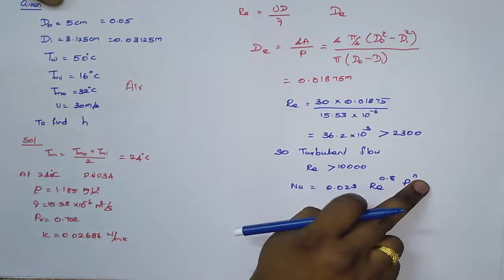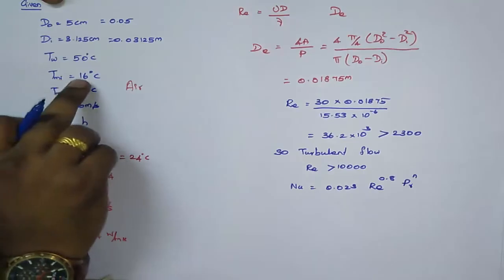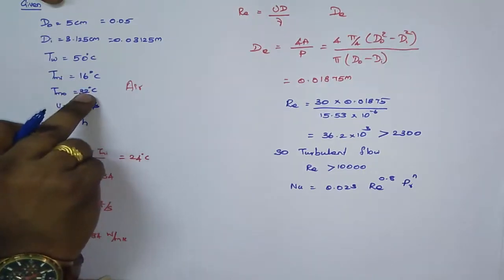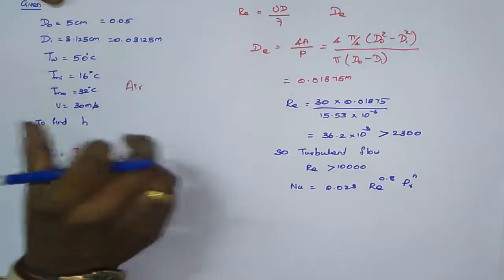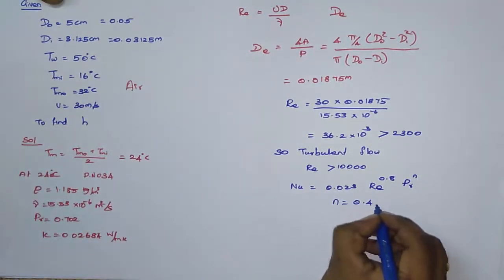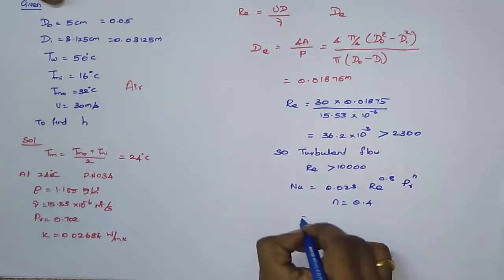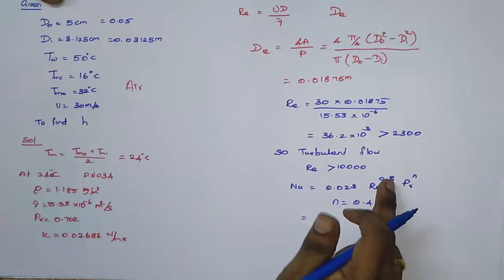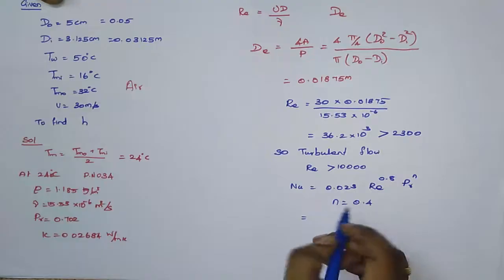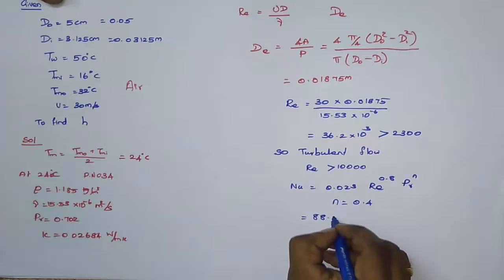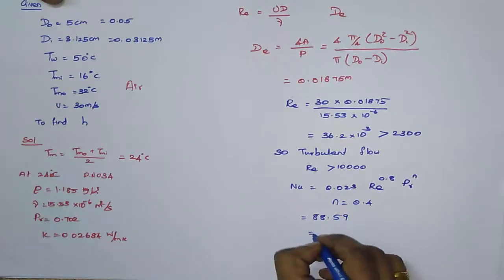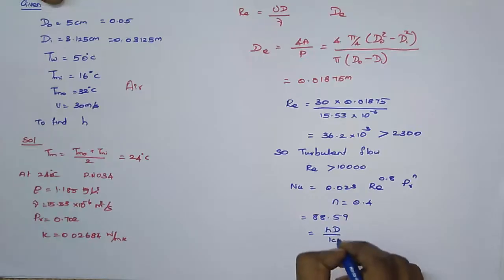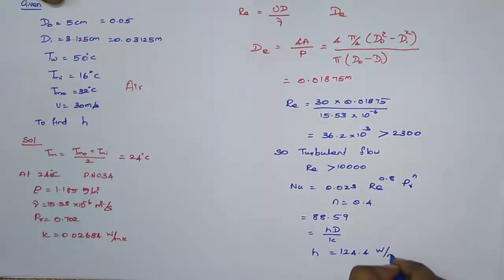For turbulent flow, use the Dittus-Boelter equation: Nu = 0.023 × Re^0.8 × Pr^n. Since inlet temperature (16°C) is less than outlet temperature (32°C), this is a heating process, so n = 0.4. Substituting all values gives Nu = 88.59. From Nu = hD/k, solving for h gives h = 124.4 W/m²·K.